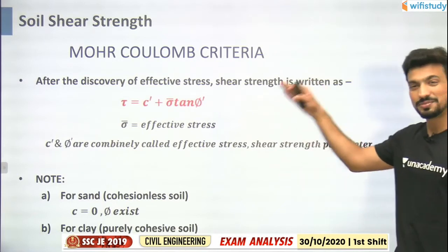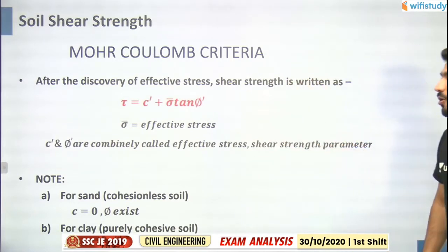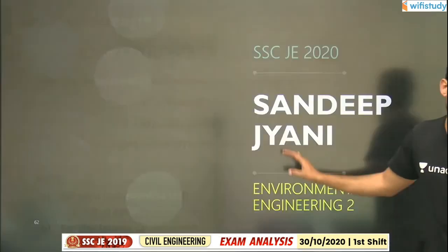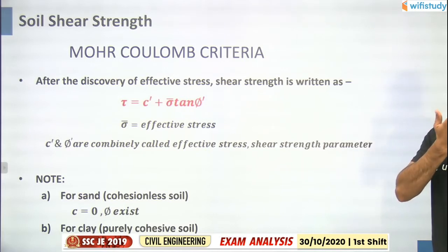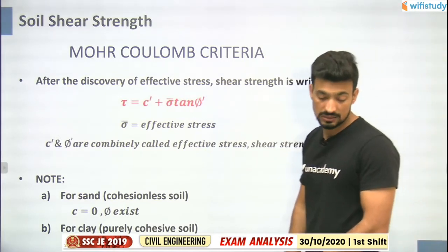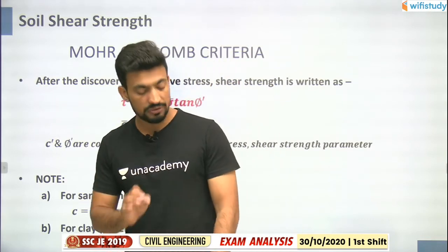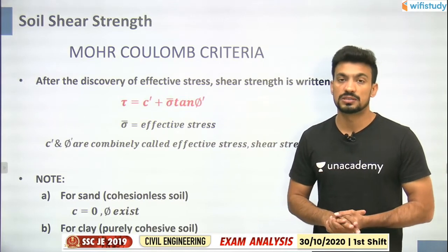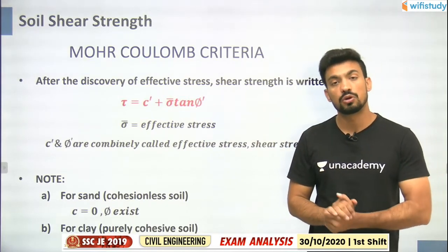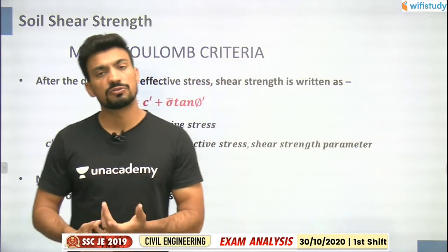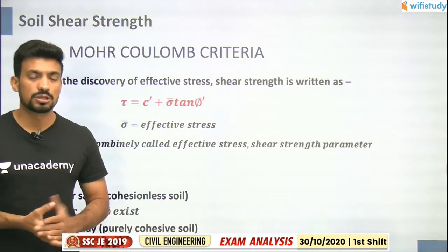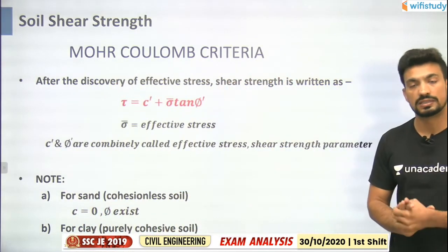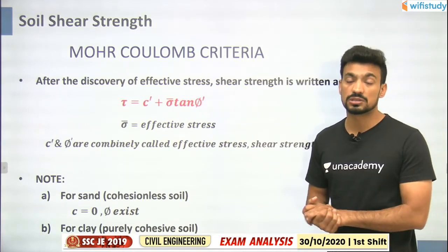With 10 minutes until exam: Mohr-Coulomb criteria question was asked - τ = c + σ tan φ. We have discussed approximately 40-50 questions and topics so that students appearing in the next shift get an idea of what has been asked and can quickly revise. A PDF will also be uploaded on Telegram in the next 2-3 minutes.